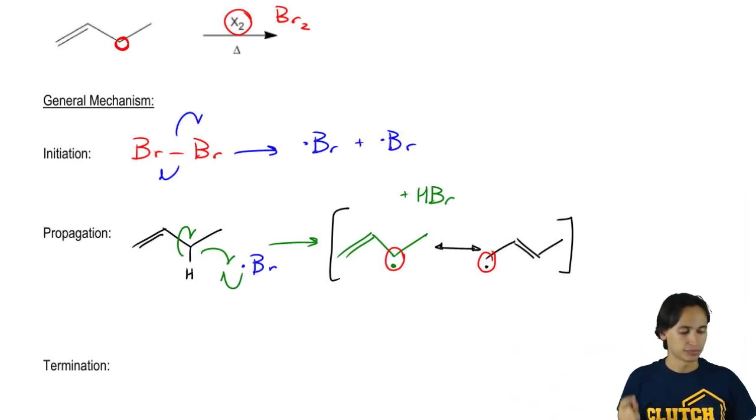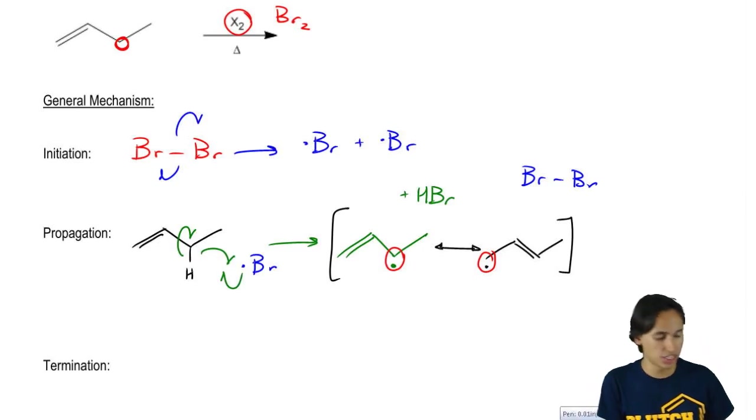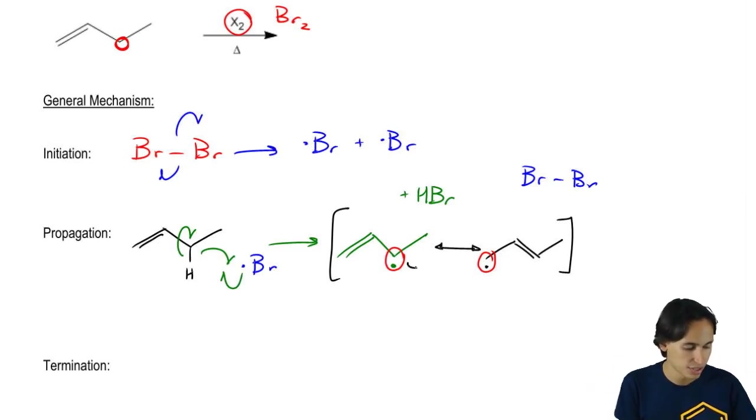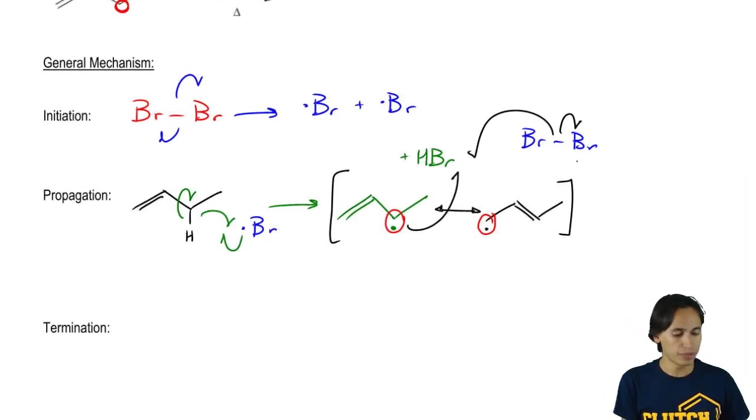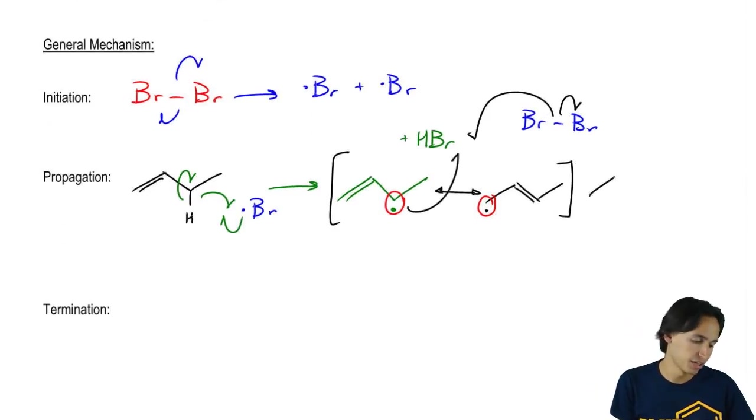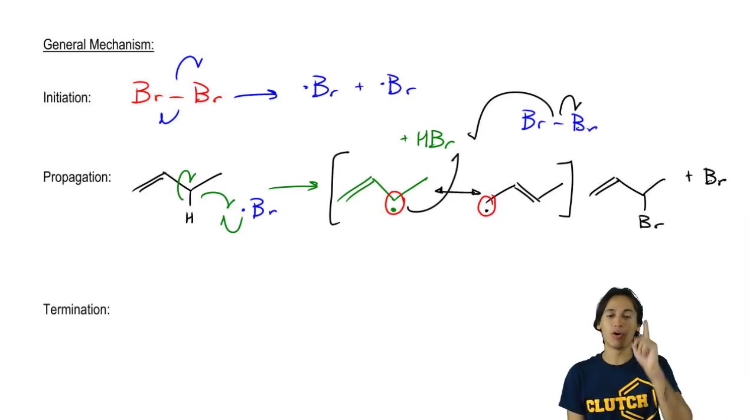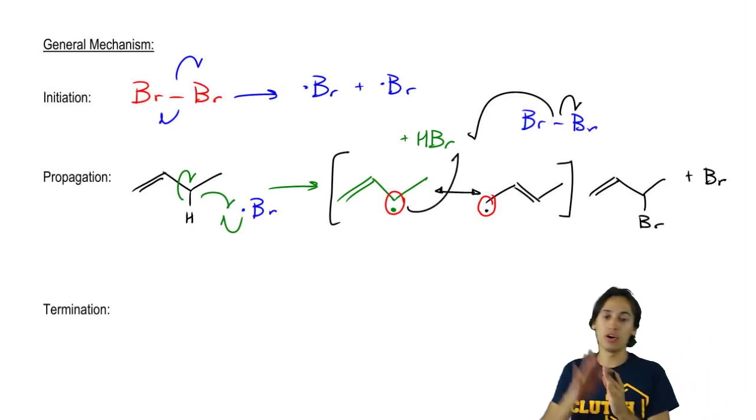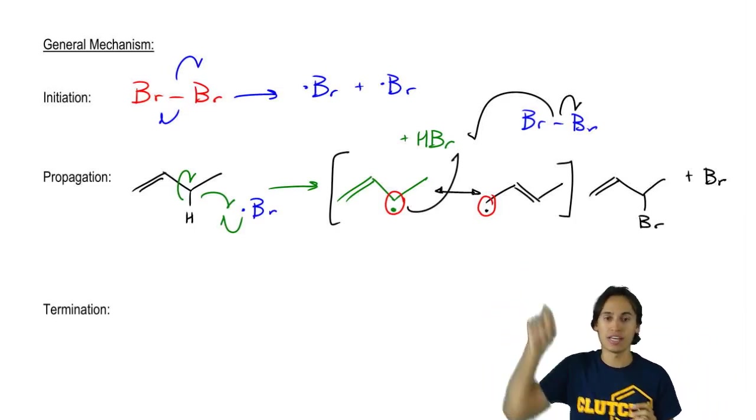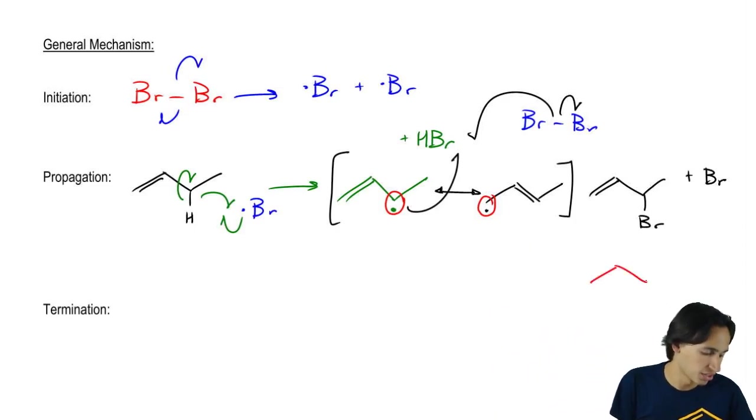So I can go ahead and draw my mechanism with the Br here from the first one. Just to keep things easy, I'll just do this there, there, and there. What I wind up getting is a Br right here plus Br radical. But I'm also going to get something else. I'm going to get a mixture of products because the radical on the end could have also attacked. So I'm also going to get a product that looks like this.